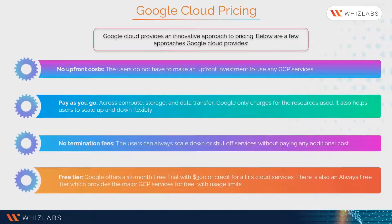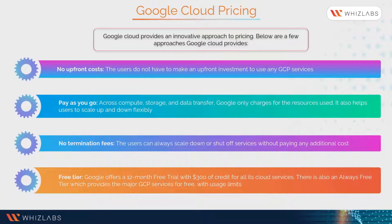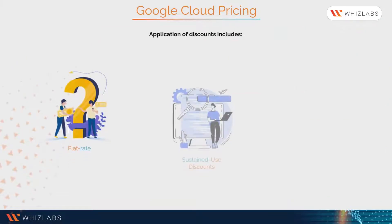No termination fees — users can always scale down or shut off services without paying any additional cost. Free tier — Google offers a 12-month free trial with $300 of credit for all its cloud services. There is also an always-free tier which provides major GCP services for free with usage limits.